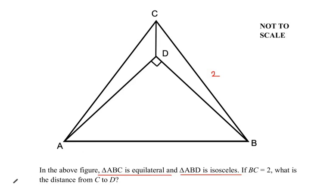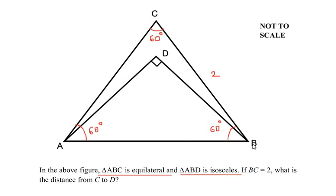Now let us consider the given information. Since triangle ABC is an equilateral triangle, all the angles of this triangle are going to be 60 degrees. So angle A is 60, angle B is 60, and angle C is also 60 degrees. And since all the angles are equal, all the sides are equal. BC is given as two units, so AB is also two units and AC is also two units.